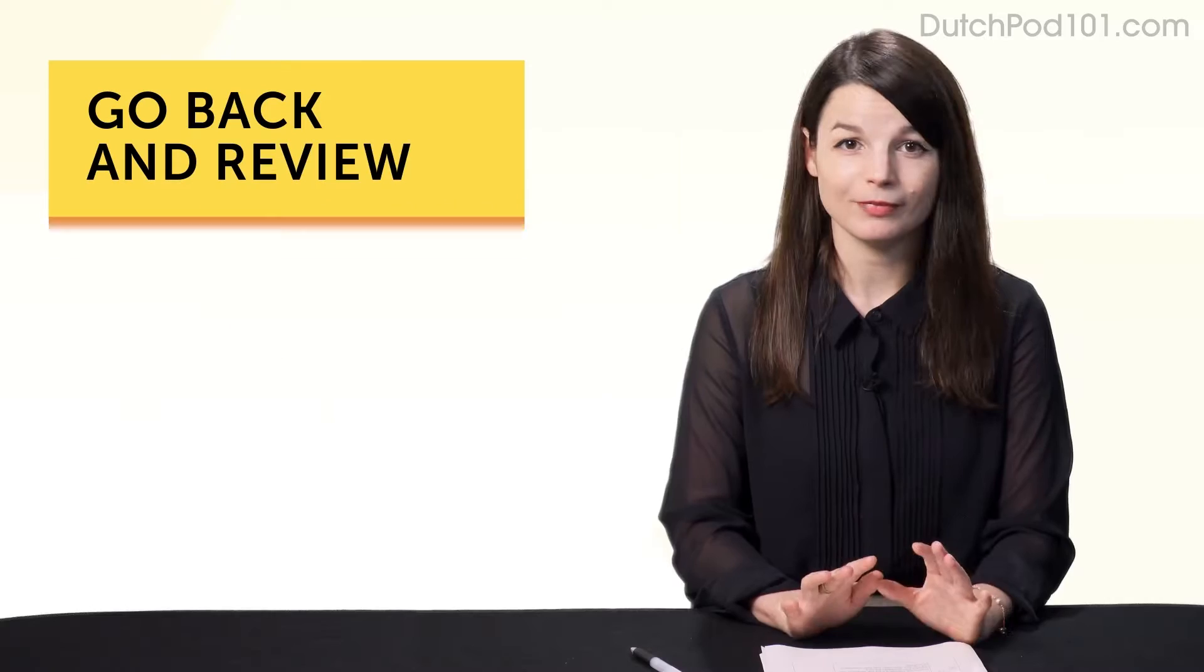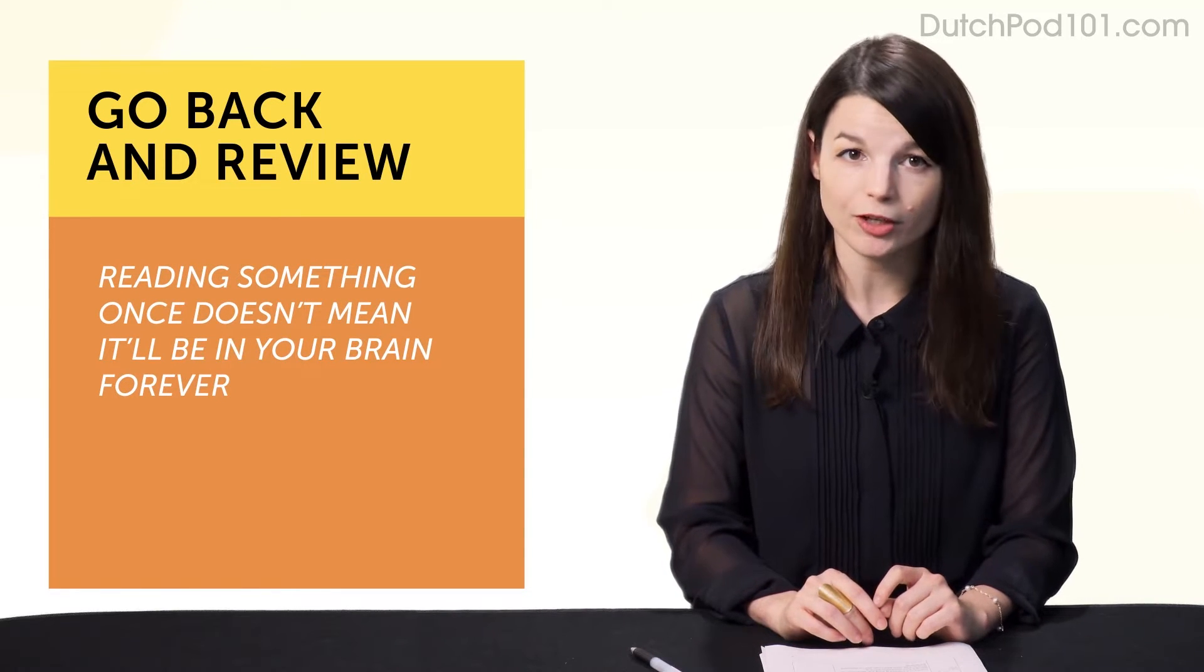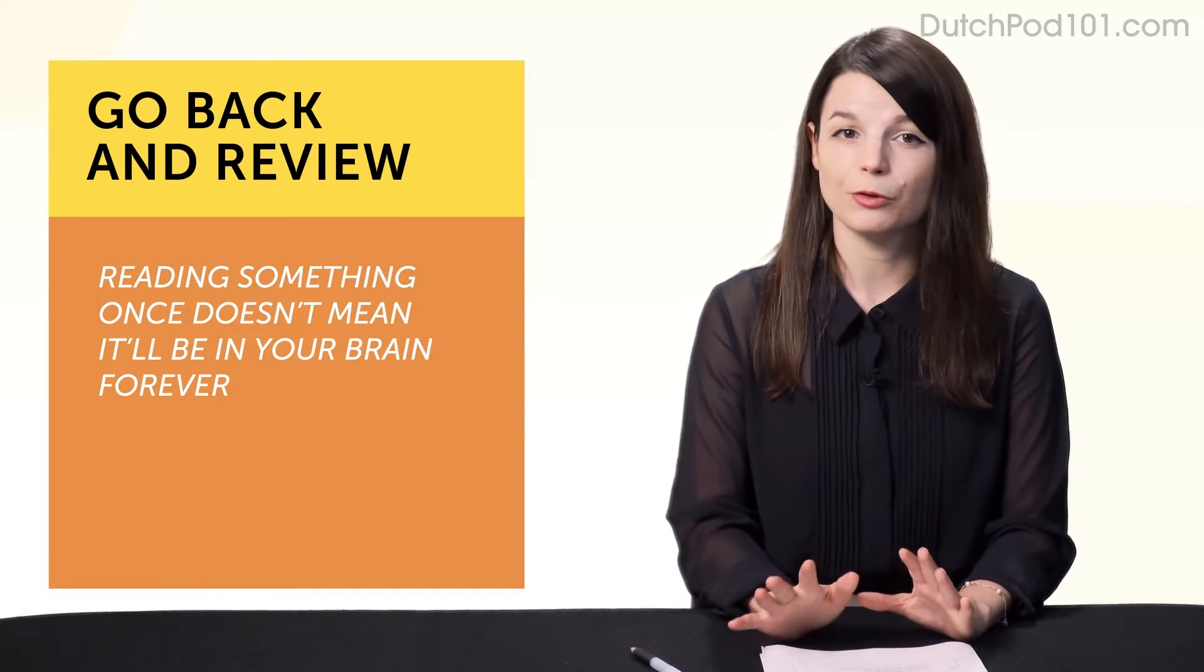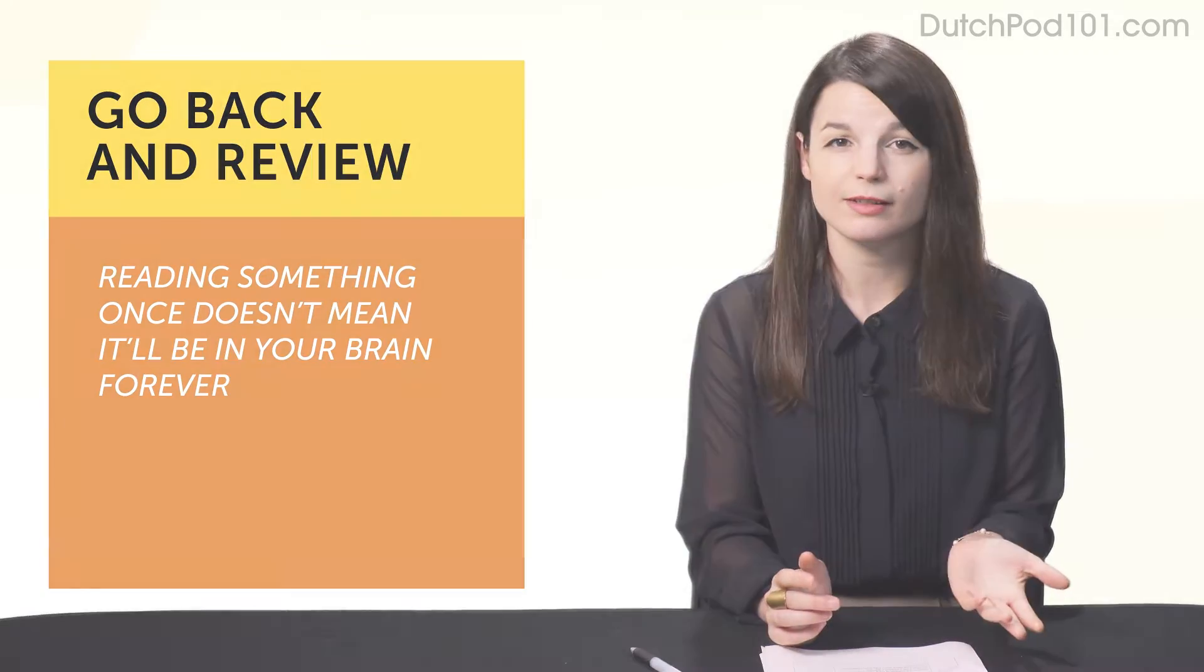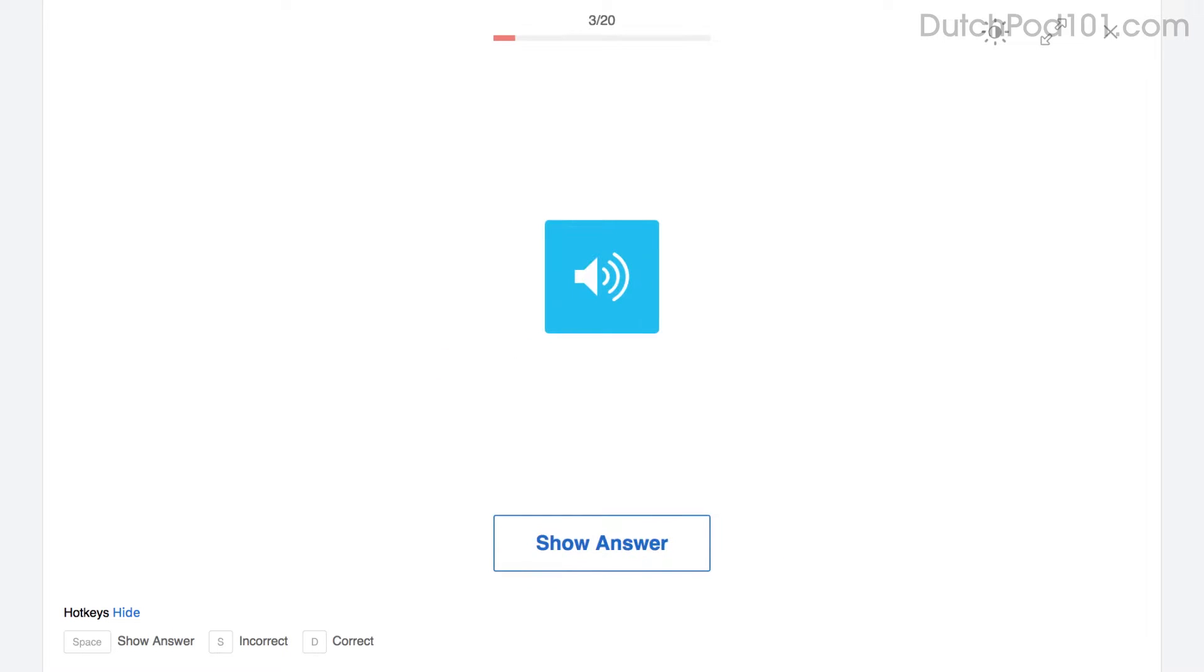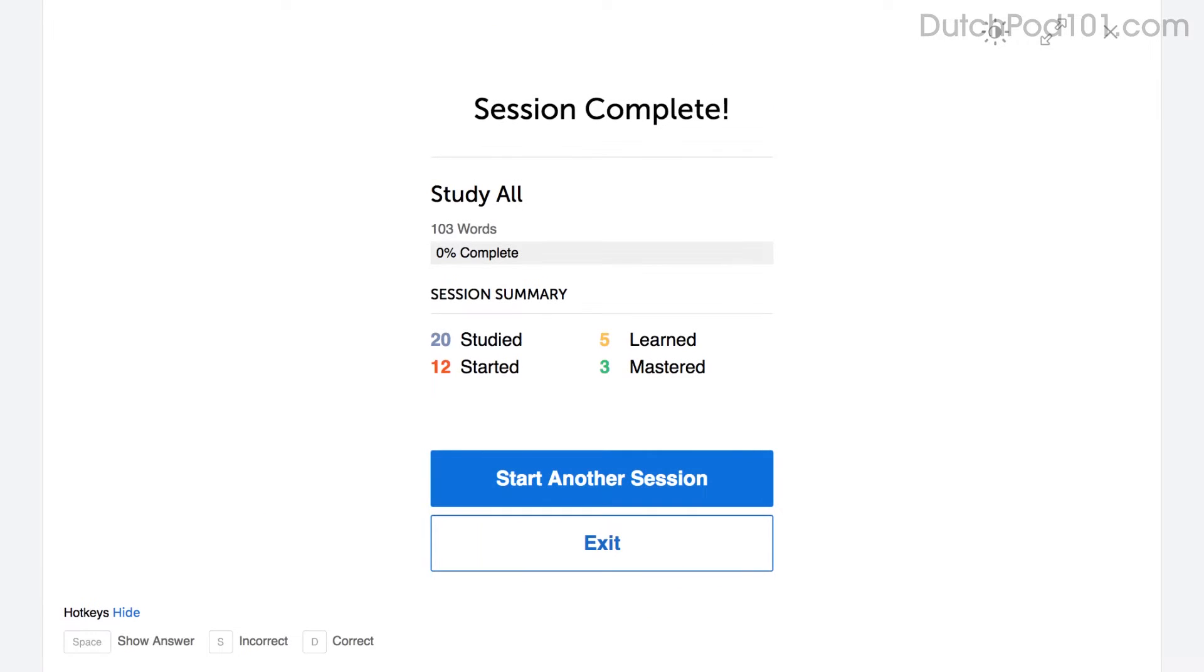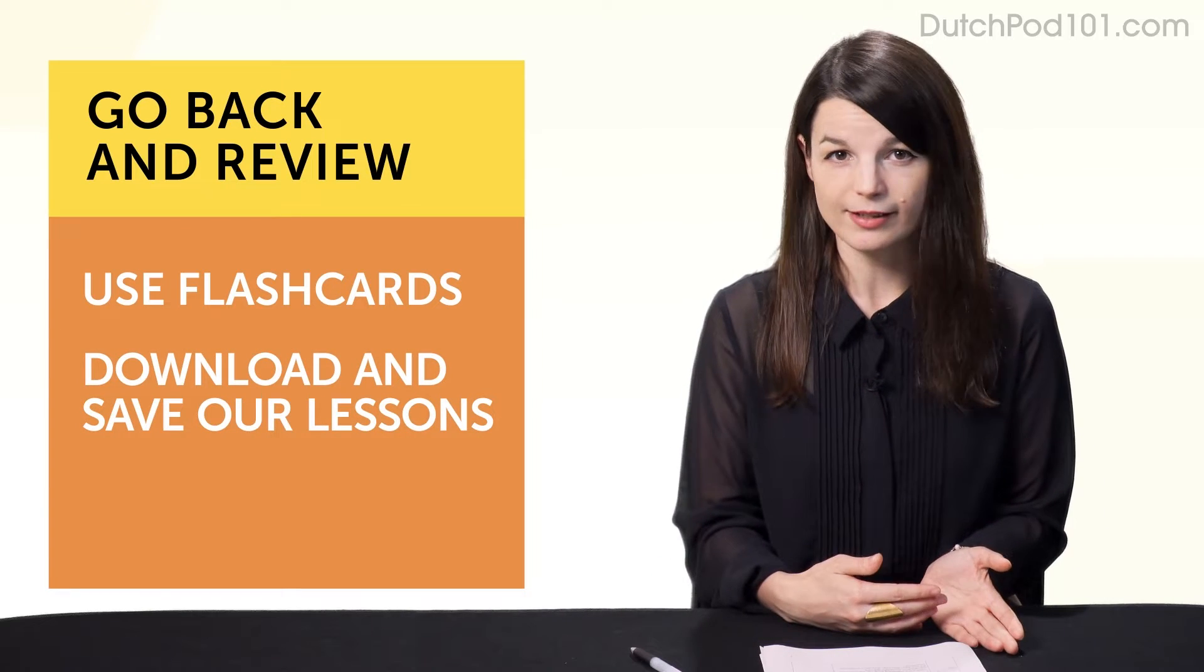Habit number six, come back and review. And that's because reading something once doesn't mean it'll be in your brain forever. So, this is where reviewing comes in. In order to master grammar, words, or phrases, you must go back and review. How do you do this? Spaced repetition flashcards are a great example of this. A lot of language learners use these because with spaced repetition, you get to see words again and again over spaced periods of time. And that improves your memory.